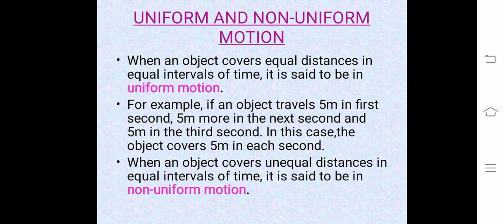For example, when a car is moving on a crowded street, or when a person is jogging in a park — these are all instances of non-uniform motion. These graphs show the difference between uniform motion and non-uniform motion.